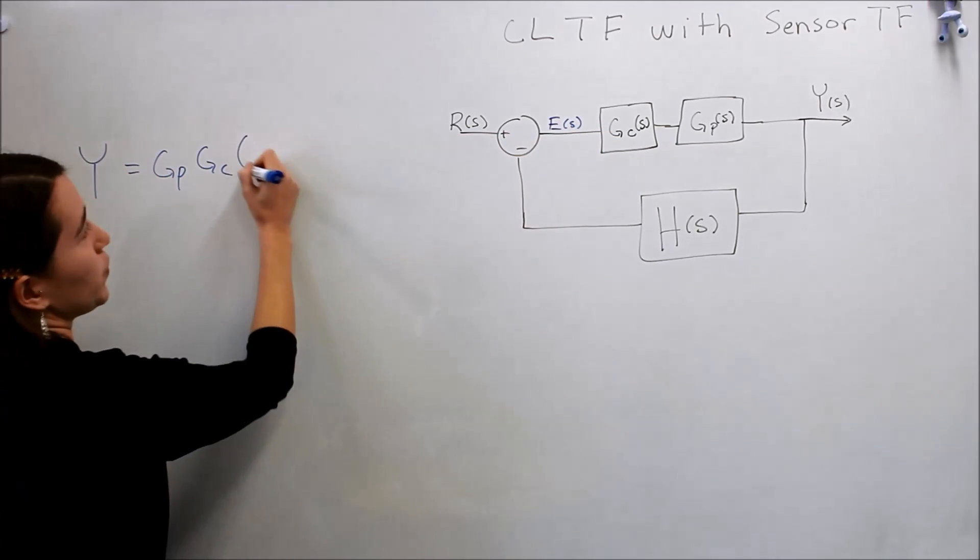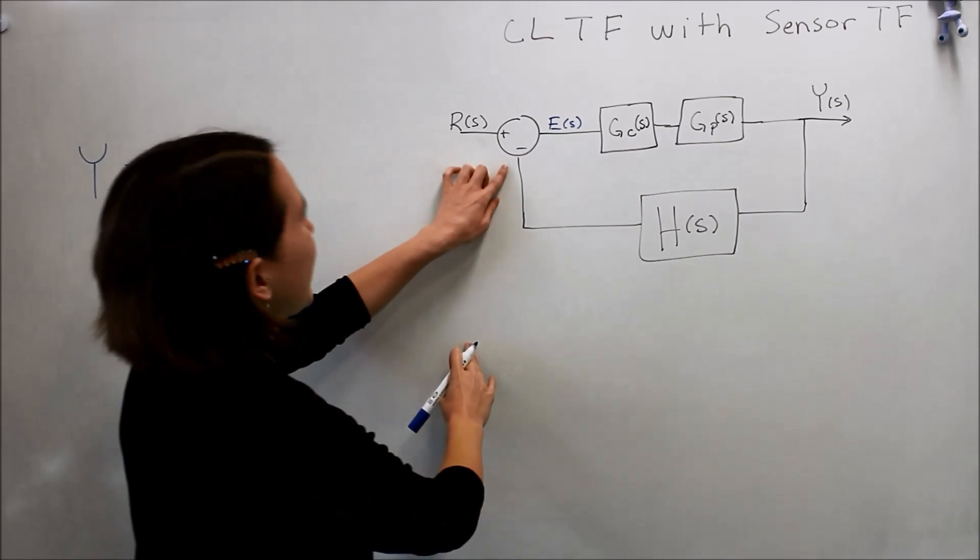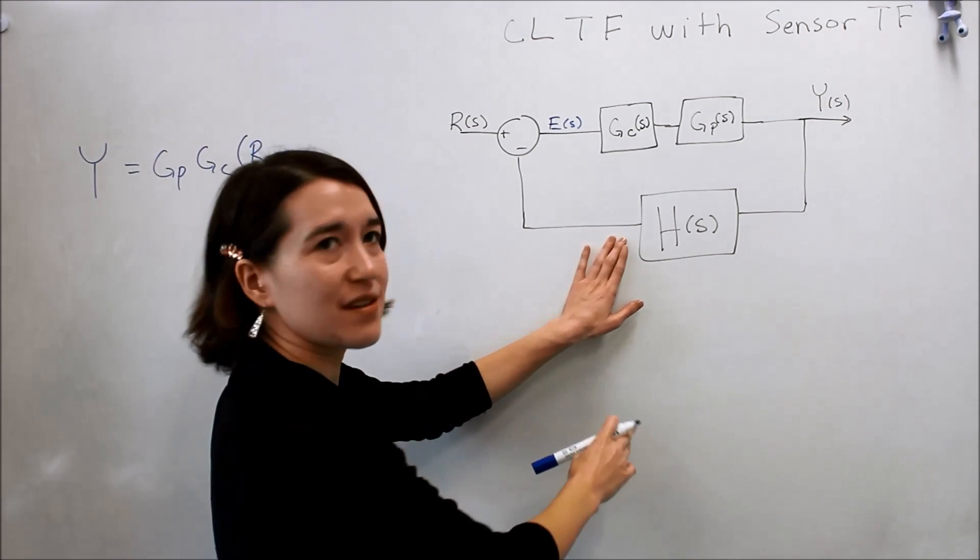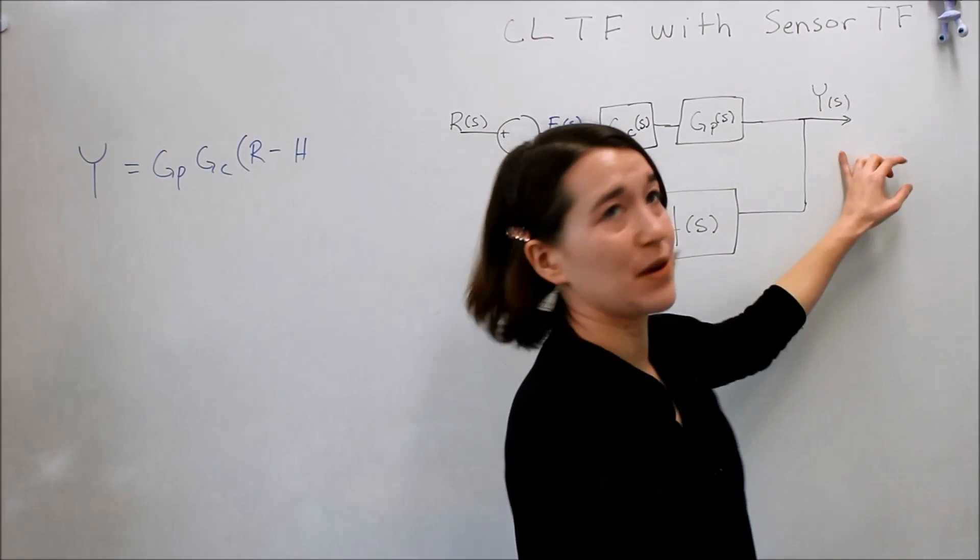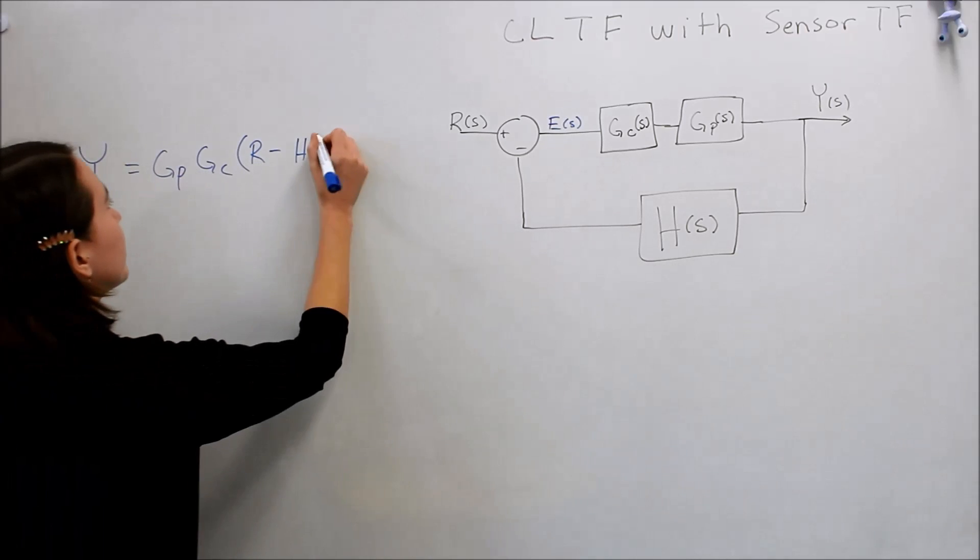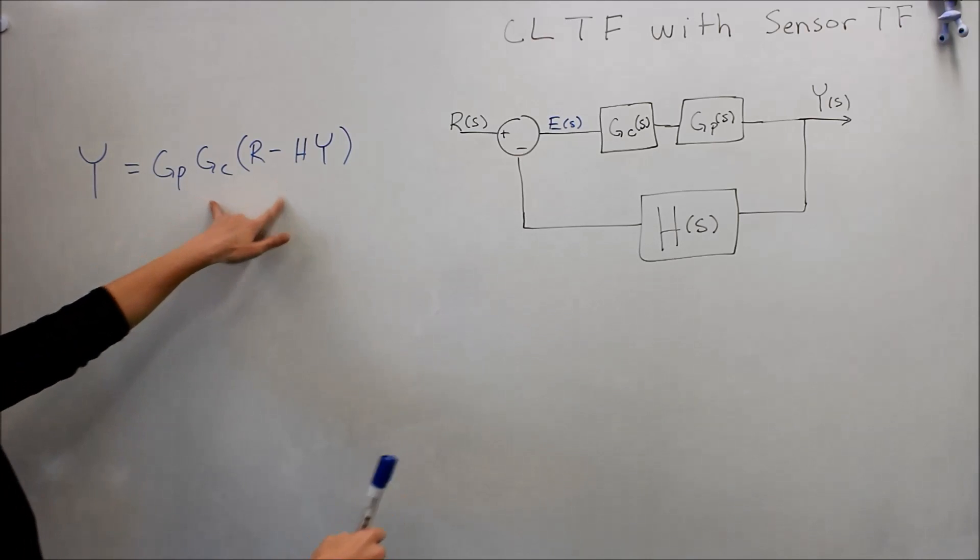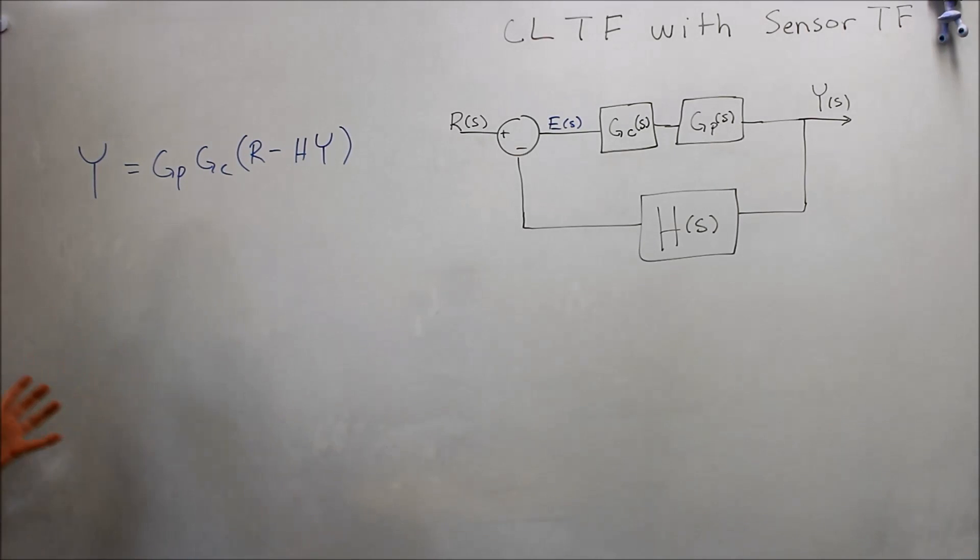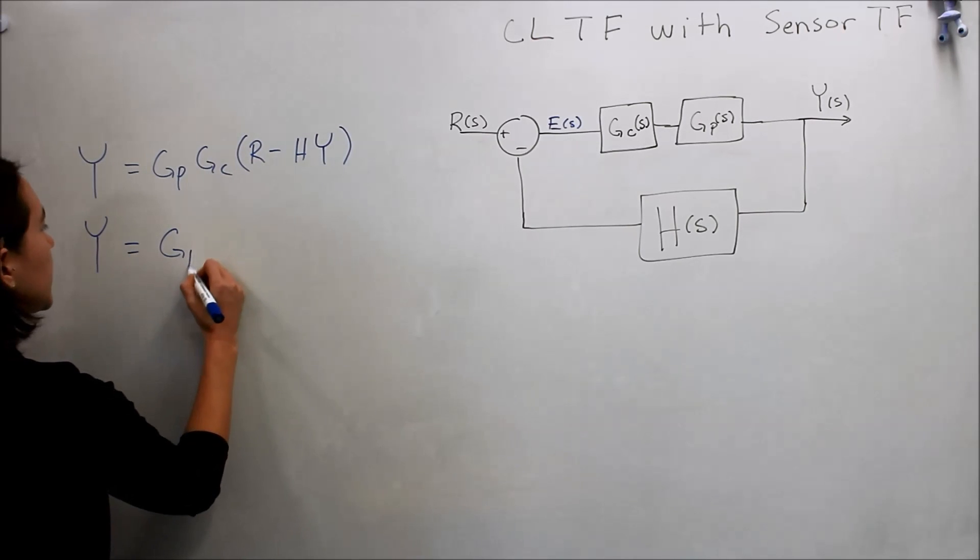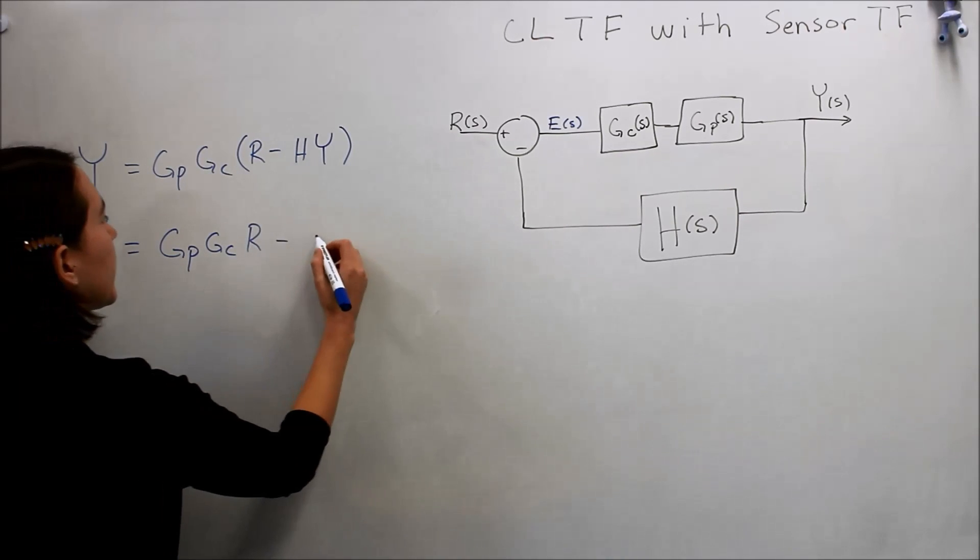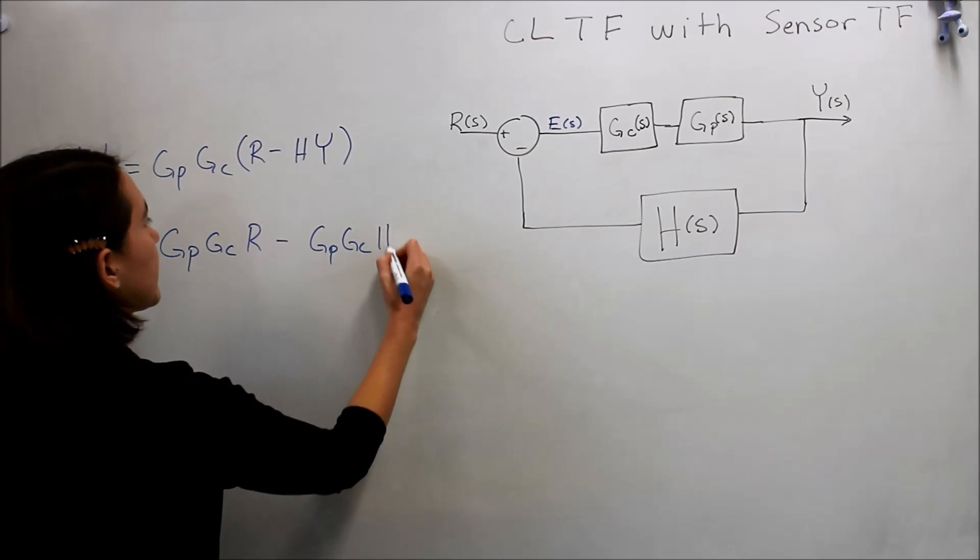The error is equal to r minus h times our y again. So here's our basic function. All we need to do is expand and then put it in our transfer function form. We'll get y equals gp gc r minus gp gc h y.